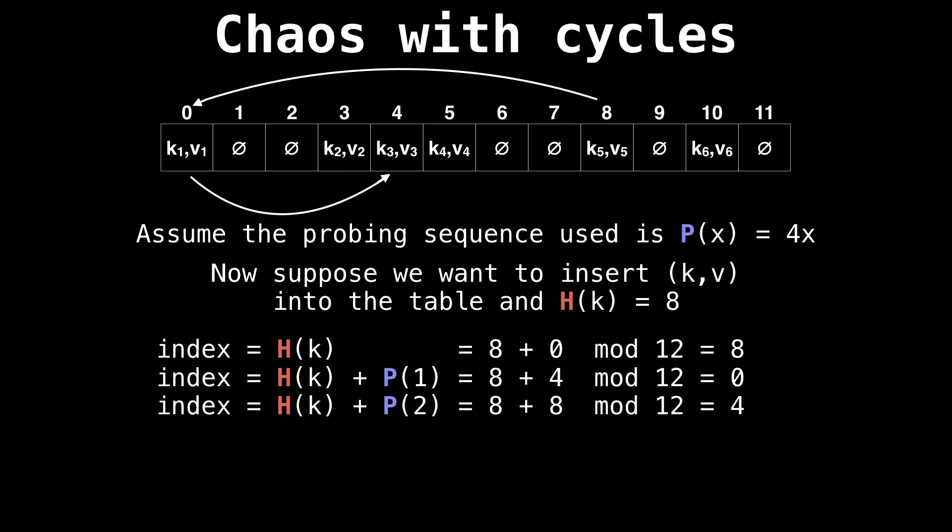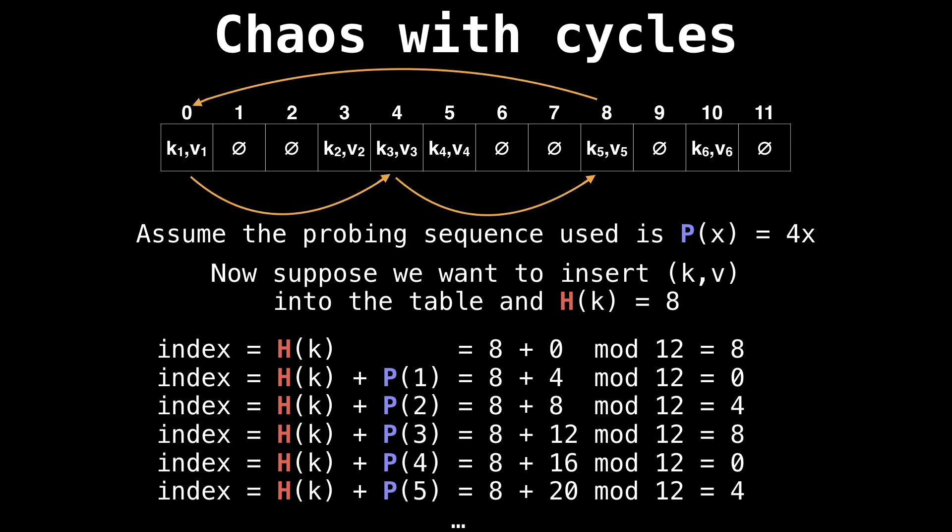Now we compute P(2). And then that gives us 16 mod 12, which is 4. And that cell is already occupied. And then we keep probing. And as you see, right now we've entered a cycle. So we keep probing and probing and probing. And we always be getting back to the same position.